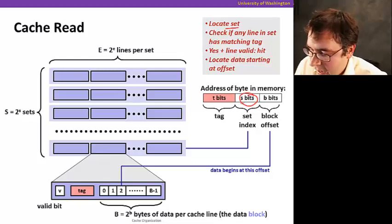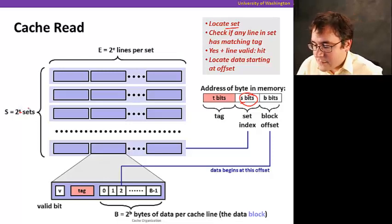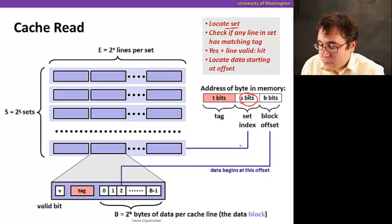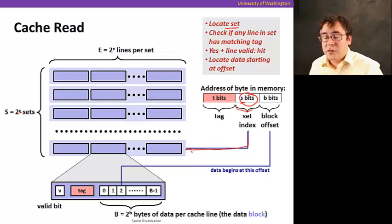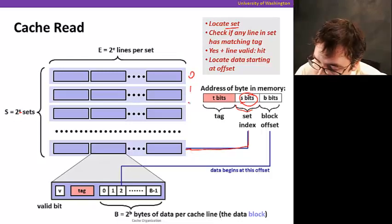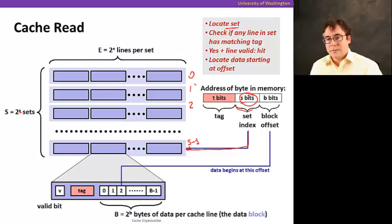Those bits are here in the middle. We're going to have S bits, because if I have 2^s sets, I'm going to use little s bits as the set index. I'm going to use that part of the address as an index to the cache, which is zero, one, two, until S minus one, and we use that value to determine which set here we're going to choose.